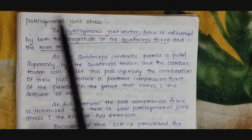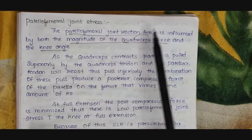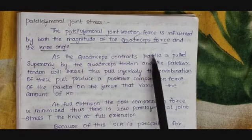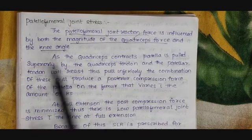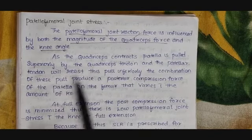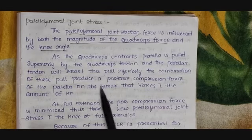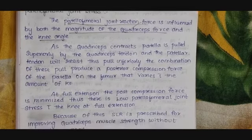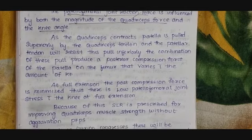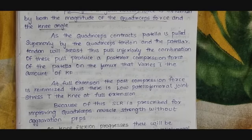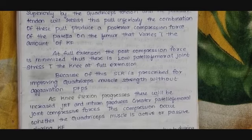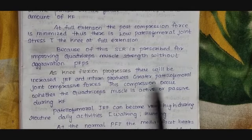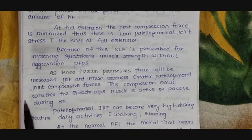Now let us discuss about the patellofemoral joint stress. The patellofemoral joint reaction force is influenced by both the magnitude of the quadriceps force and the knee angle. As the quadriceps contract, the patella is pulled superiorly by the quadriceps tendon, and the patellar tendon will resist this pull inferiorly. The combination of this pull produces a posterior compression force of the patella on the femur that varies with the amount of knee flexion. At full extension of the knee, the posterior compressive force is minimized, so there is low patellofemoral joint stress. As knee flexion progresses, there will be increased joint reaction force, producing greater patellofemoral joint compressive forces. This compression occurs whether the quadriceps muscle is active or passive during knee flexion.